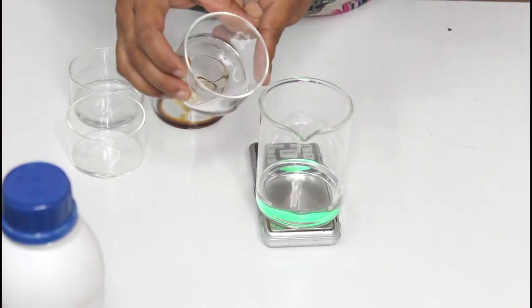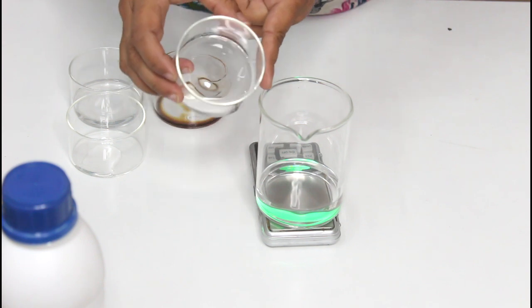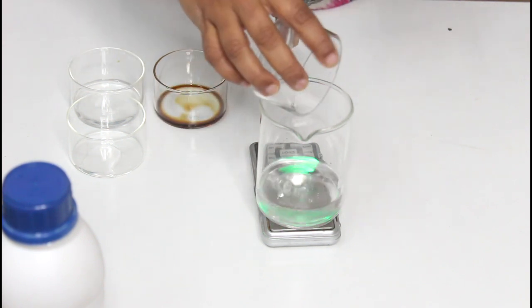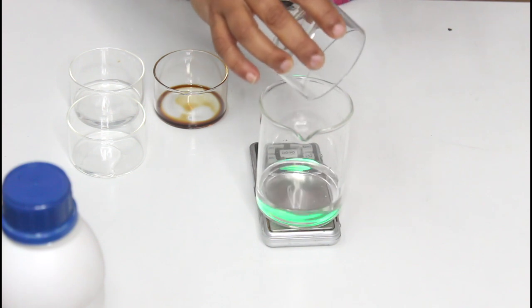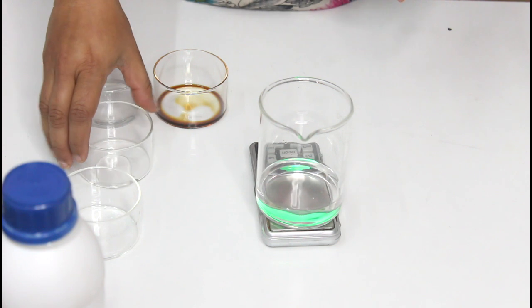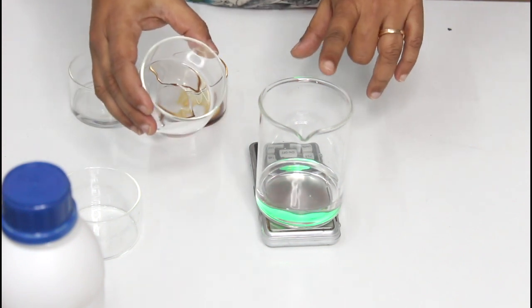Now the second ingredient which I am using is hydrogen peroxide. As per WHO, hydrogen peroxide will help in killing the bacteria which are present in water or in the container.